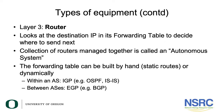Unlike switches, which are able to build their bridge tables automatically, the forwarding tables on routers have to be set up explicitly. There are a number of ways this can be done: you can do it entirely by hand, which is called static routing, or you can use dynamic routing, where routers exchange information with each other to learn the topology of your network, what IP subnets exist, and how to reach them.